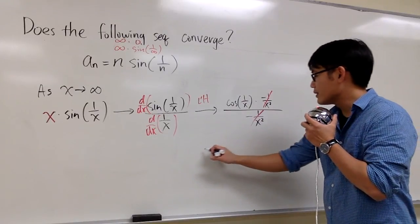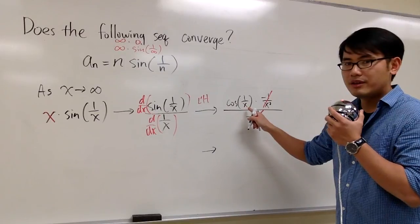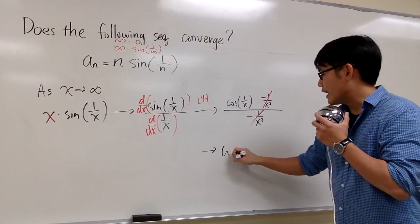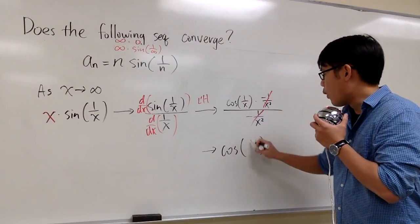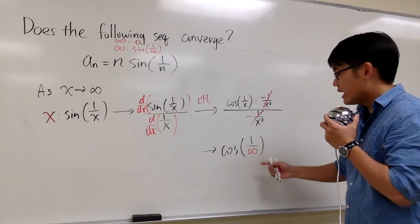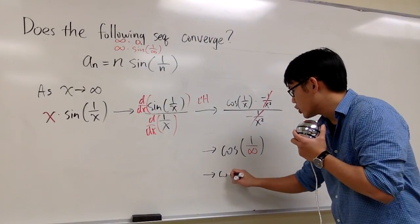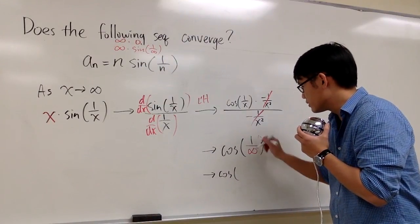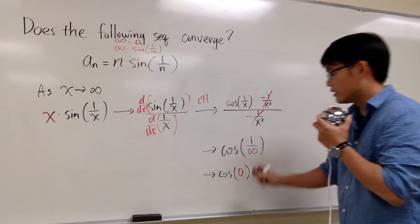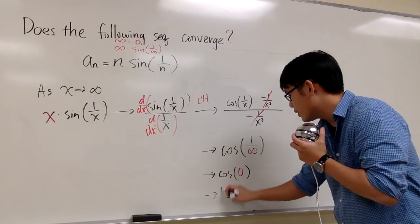Now we just have to worry about what happens if x goes to infinity. We will have cosine of 1 over x as x approaches infinity. We can draw a conclusion here. This is the same as cosine of 0 because 1 over infinity goes to 0. Cosine of 0, we know that it goes to 1.